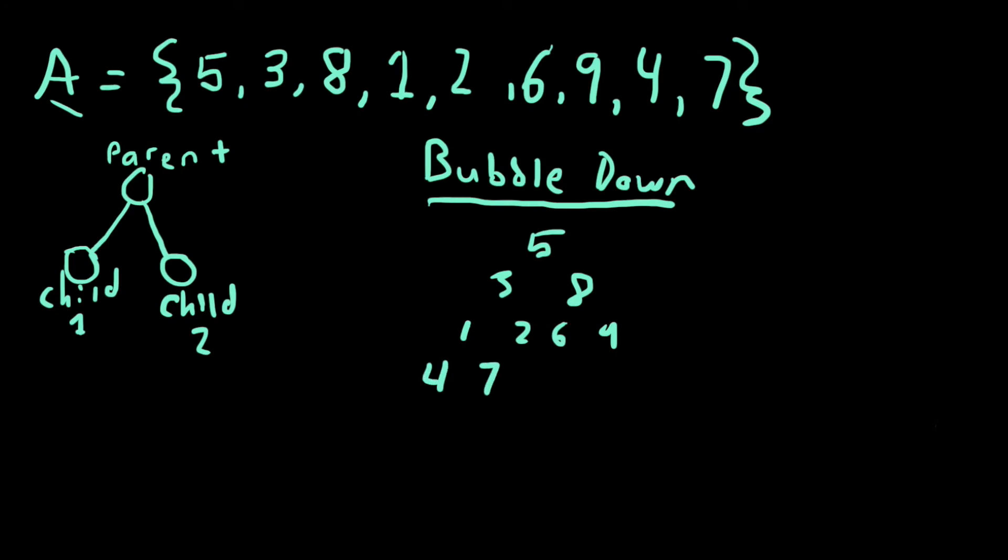Since the array was pre-initialized, we look at the nodes at the bottom that contain children, which are these nodes right here: 1, 2, 6, and 9. The loop goes from bottom to top and left to right, so we look at 1 first and look at its children, 4 and 7, right here.